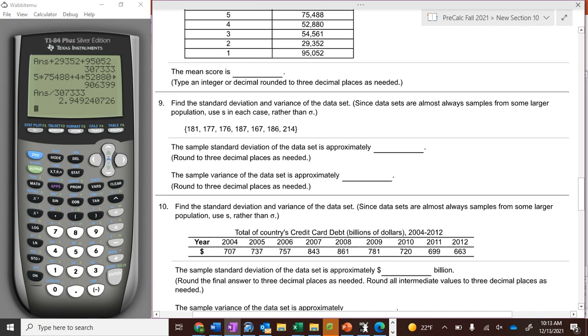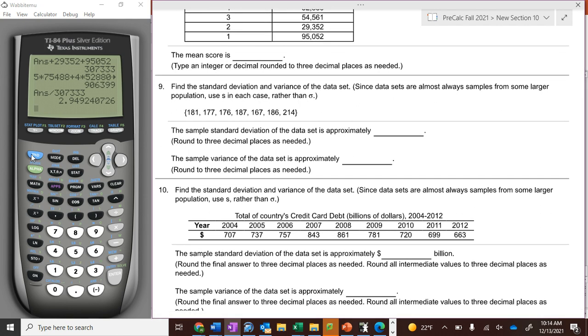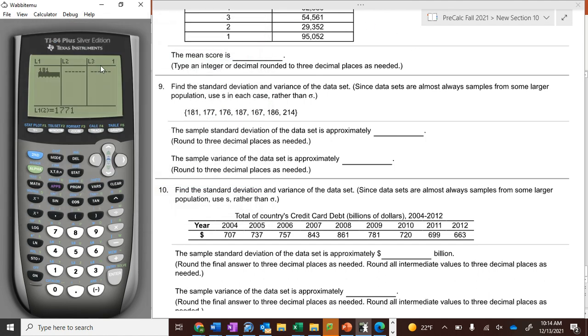It says find the standard deviation of this set of data. Well, our calculator finds it for us. So you go stat, edit, we're going to clear out our lists here so they're ready to go. So if I go 181, 177, 176, 187, 167, 186, and 214, that's my set of data.